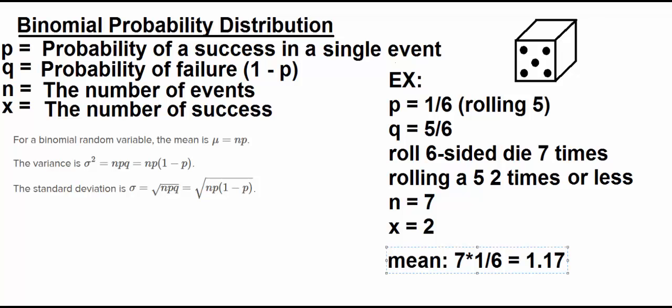The standard deviation is the square root of n times p times q. So here you're looking at a standard deviation of the square root of seven trials times 1/6 times 5/6.